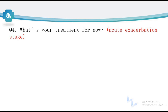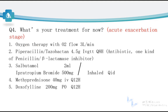Question 4: What is your treatment now — that is, treatment for COPD in the acute exacerbation stage? The answers include: low-flow oxygen therapy; antibiotics for the respiratory infection; bronchodilators including salbutamol and ipratropium bromide for inhaled therapy; an IV corticosteroid for the severe dyspnea; and do not neglect doxophylline, another bronchodilator.